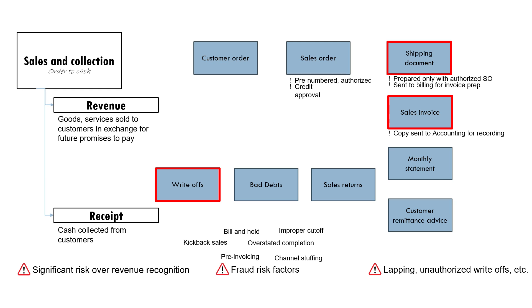Another fraudulent transaction is improper cutoff — when businesses keep the books open. Sometimes this happens when a quota or a target has not yet been met, and they keep the books open so that sales made in January of the next year are recorded in December of this year, just so they can meet the quota and be eligible for a bonus. Another is kickback sales — commissions and under-the-table transactions — or overstated percentages of completion, knowing that percentage of completion requires some level of estimation.